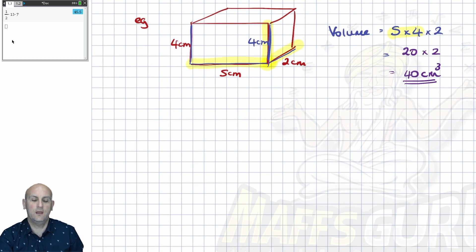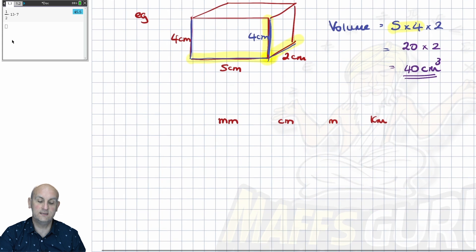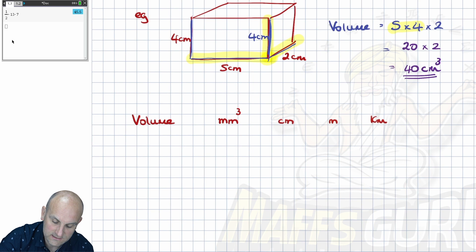Well, in a previous video, we noticed that a lot of our lengths are done in terms of millimeters, centimeters, meters, and kilometers. And actually, our volumes can be exactly the same. So, our units of volume would be millimeters cubed, centimeters cubed, meters cubed, and kilometers cubed. So, that's for everything that isn't a fluid.